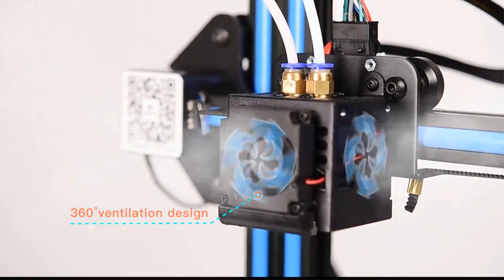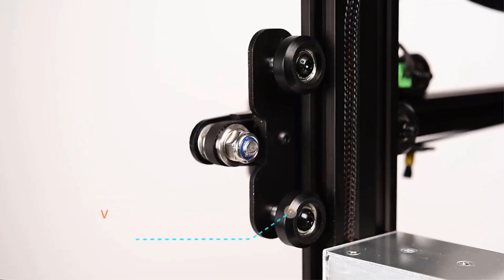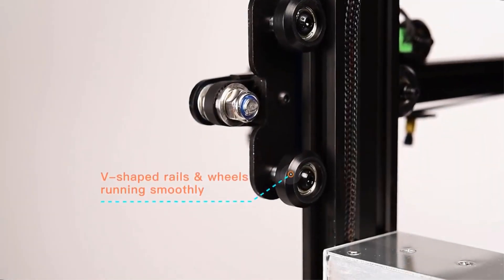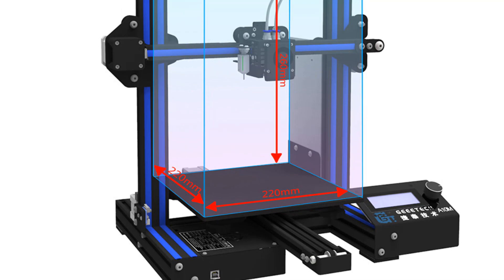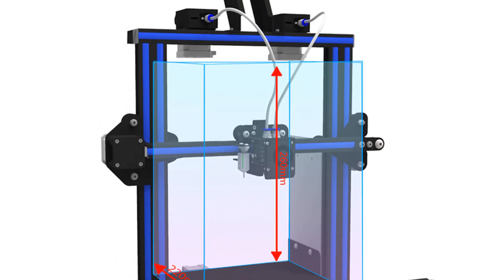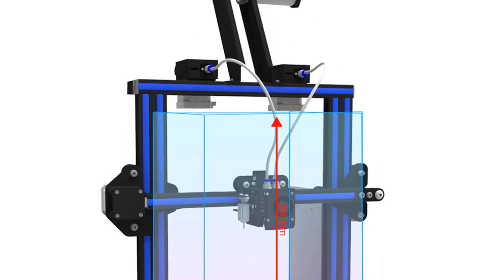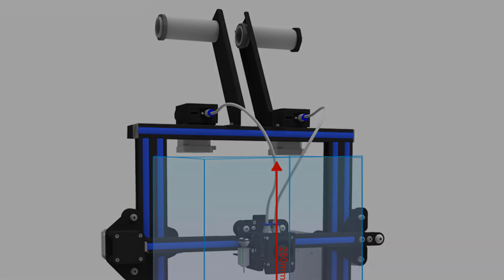With a printing size of 220 by 220 by 260 mm, the A10M offers a decent build volume for creating medium-sized objects or multiple smaller prints in a single job. This size allows users to bring their creative ideas to life with a good level of detail and precision.